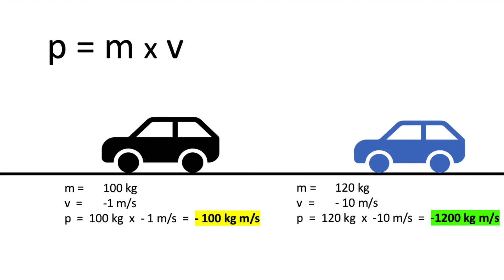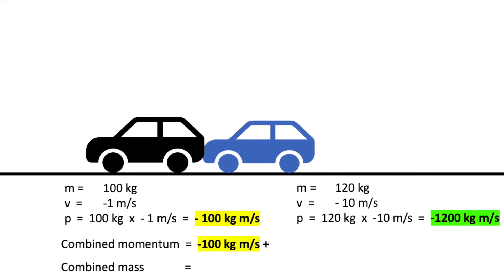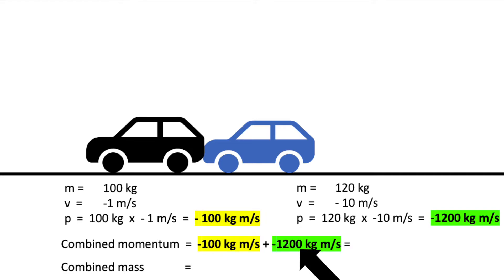And now the cars are going to collide with one another. To work out the combined momentum after the collision, you add minus 100kgm per second plus minus 1200kgm per second, which gives you a combined momentum of minus 1300kgm per second.